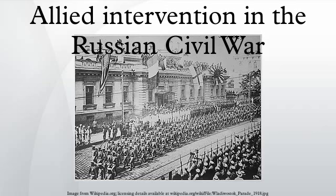These factors, together with the evacuation of the Czechoslovak Legion, compelled the Allies to withdraw from North Russia and Siberia in 1920, though Japanese forces occupied parts of Siberia until 1922 and the northern half of Sakhalin until 1925.